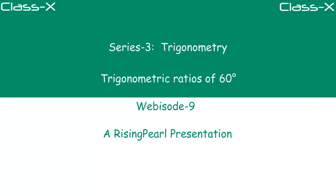Hello friends. Welcome to risingpearl.com. Today we are talking about series 3 where we are learning trigonometry. This is our webisode number 9. Today's topic is understanding the trigonometric ratios of the 60 degree angle. In webisode 8, the last webisode, we looked at trigonometric ratios of 45 degrees. Let's find out trigonometric ratios for the 60 degree angle.